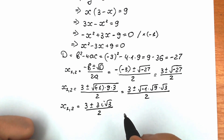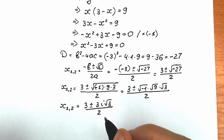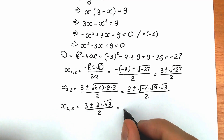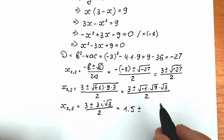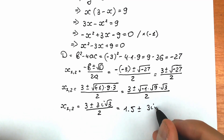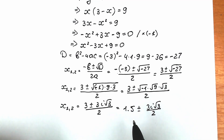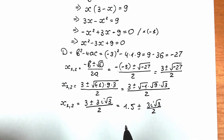We can also simplify this by working with decimal values. Let's divide 3 by 2: as a result we can write it as 1.5 plus or minus 3i square root of 3 divided by 2. So this is our answer for x, written in decimal form.